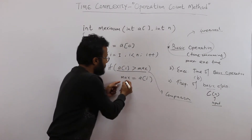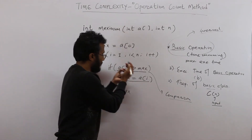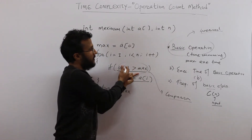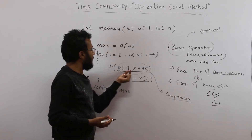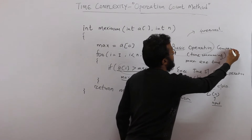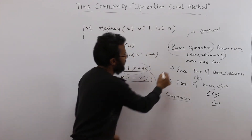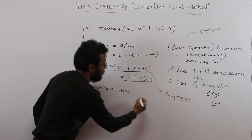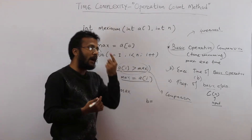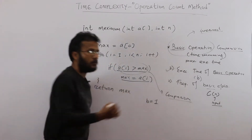You could also choose the assignment statement, but that only executes if the condition becomes true. The comparison, however, is always executed. So this is the operation which takes maximum execution time. In this example, the basic operation is comparison. Now we find B — the time requirement for performing one comparison. Let's say it takes a constant one unit of time.